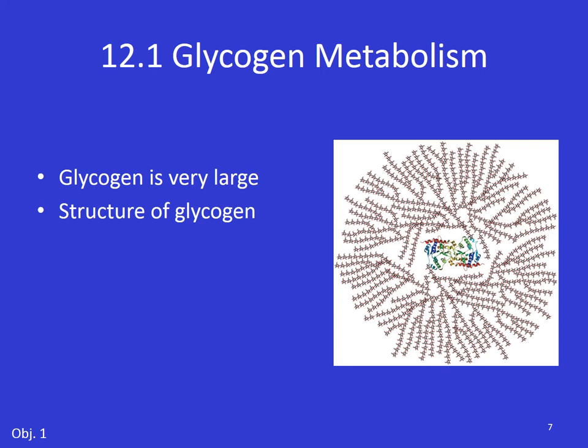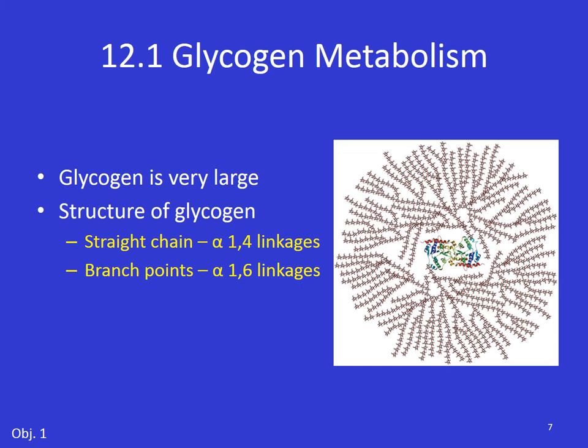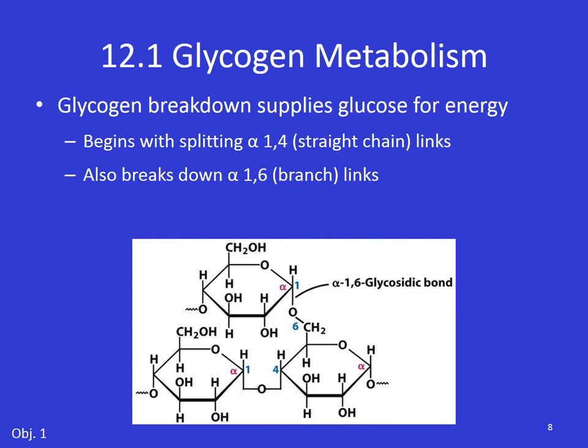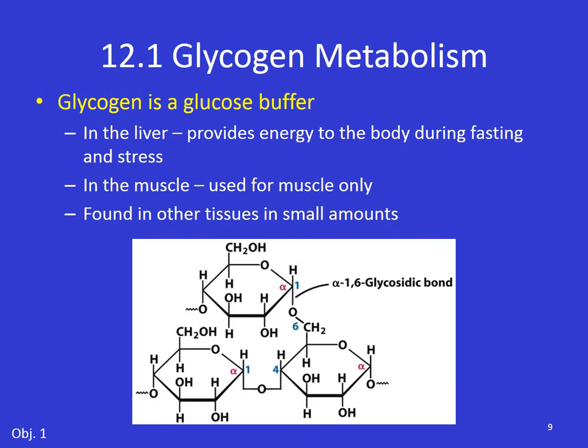Glycogen is really large. It's got lots and lots of chains of glucose molecules attached one to another. The straight chain portions are alpha-1,4 linkages, and every time a branch occurs, that's a 1,6 linkage. At the middle there's a tiny protein called glycogenin, which forms the core of glycogen. Breaking down glycogen supplies a steady stream of glucose for energy. It begins by splitting the alpha-1,4 straight chain links, but once it gets to an alpha-1,6 bond it can also break those down, releasing a whole molecule of glucose each time.